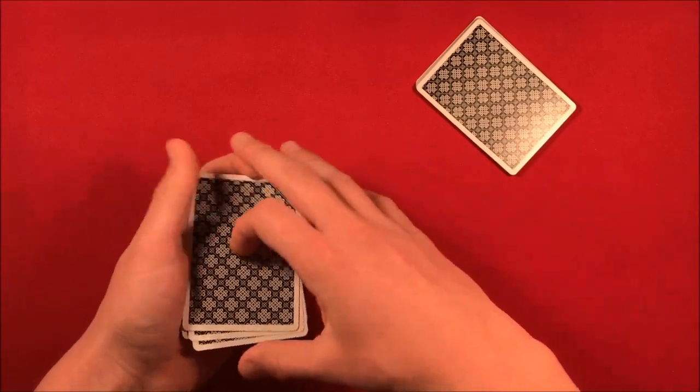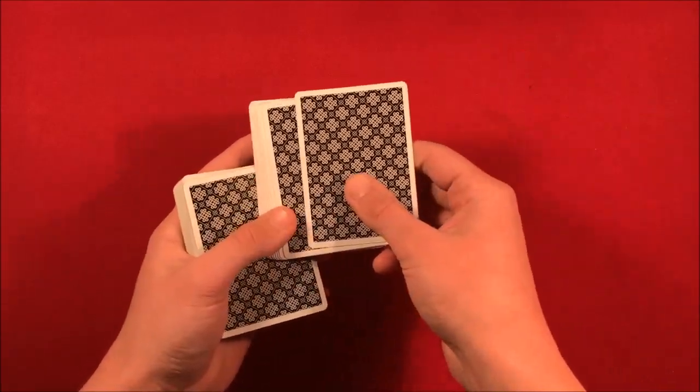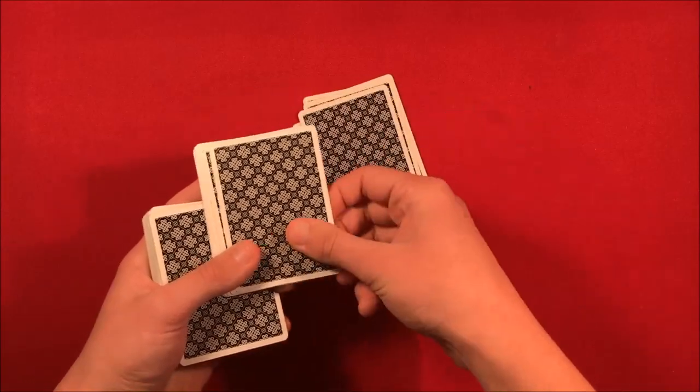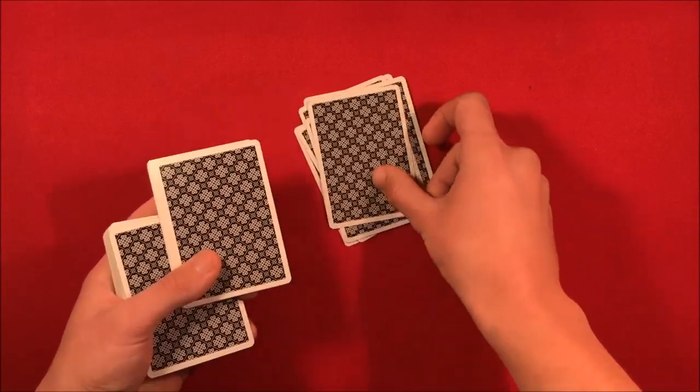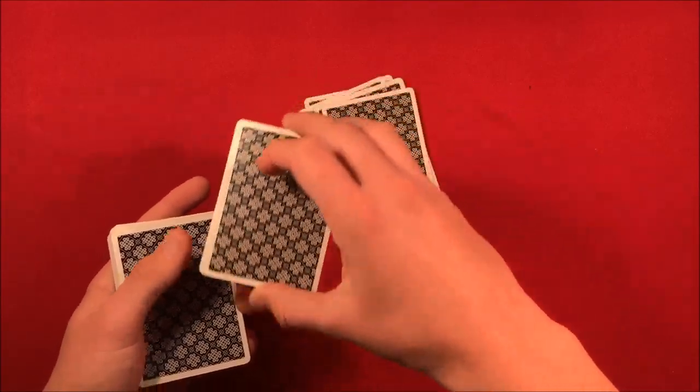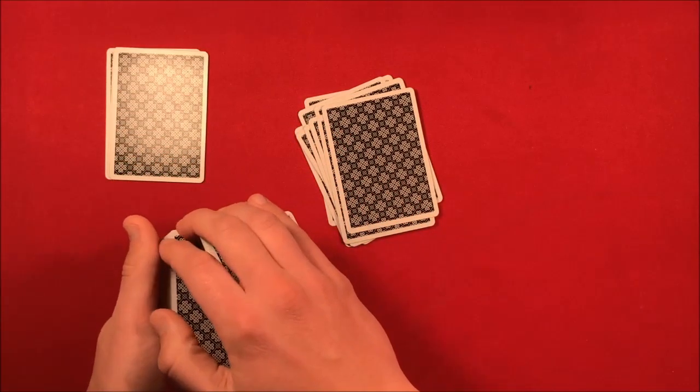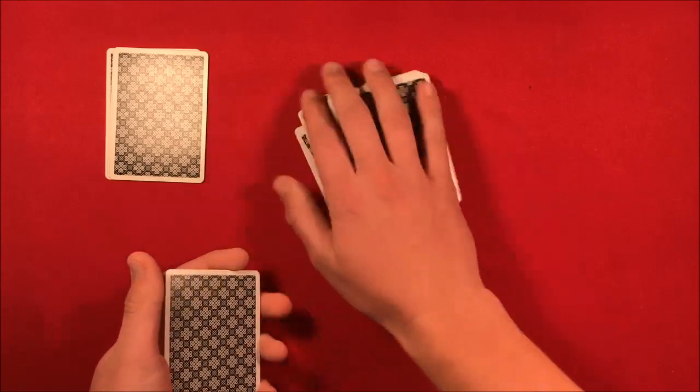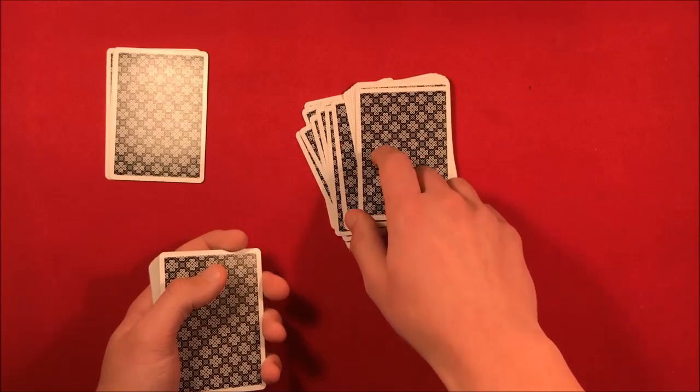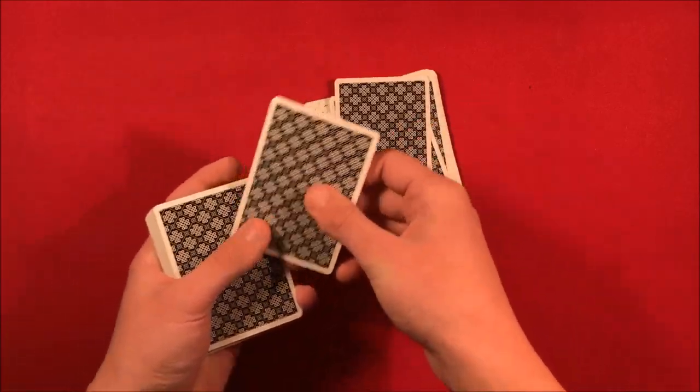He picks up that seven card packet and he kind of just catches a break like this. So at this point, the spectator is now taking their 13 card pack and dealing them out. One, two, three, four, five, six, seven, eight, nine. And when the spectator gets to 10, David Blaine, he'll take these seven cards and he kind of has them palmed. So as soon as the spectator gets to 10, he goes, okay, remember that was the original number. And when he says that, he's placing seven additional cards onto this packet, and the spectator continues to go 11, 12, 13.